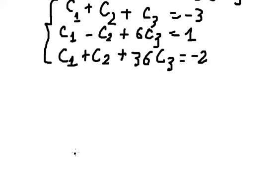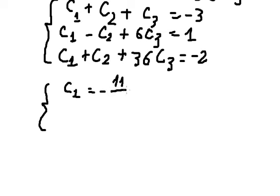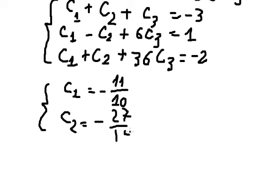Solving the system of equations, we find c₁ equals negative eleven over ten, c₂ equals negative twenty-seven over fourteen, and c₃ equals one over thirty-five.